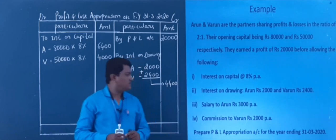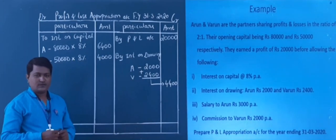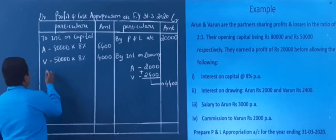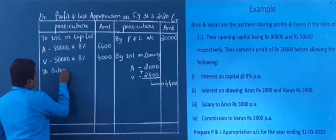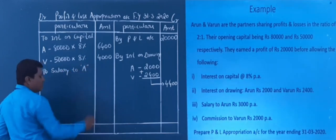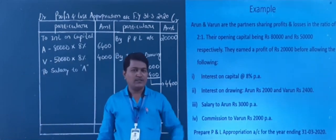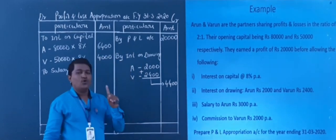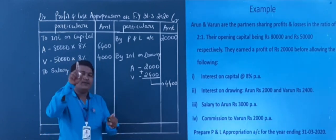Next, salary to Arun — the firm gives Arun a salary, so salary goes on the debit side. Salary to Arun is rupees 3,000 per annum. So I take 3,000 for Arun's salary.